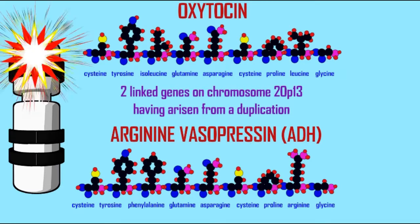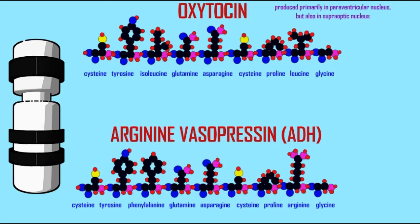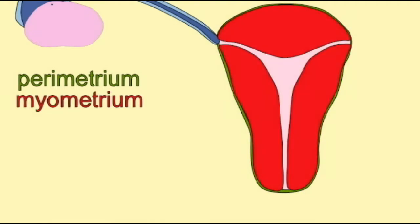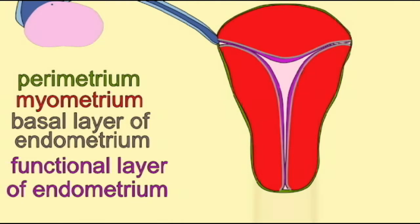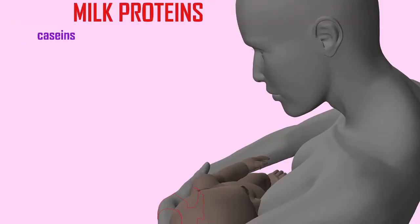Oxytocin also has a number of roles. It is linked to functions involving appetite. Its reduction or interference in the production of oxytocin may be a factor in autism. That being said, the major functions of oxytocin revolve around reproduction. It is the main signal in orgasm. Oxytocin is the signal to the smooth muscle of the myometrium of the uterus to contract during labor, which is why synthetic forms of oxytocin, like pitocin, can be used to induce labor. And it is the hormone responsible for the ejection of milk, or milk letdown during lactation.